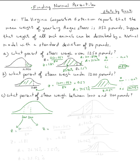This is going to be 1000 minus 1152 divided by 84. This z will be negative 1.81. And the other z will be 1100 minus 1152 over 84, and this z will be negative 0.62.